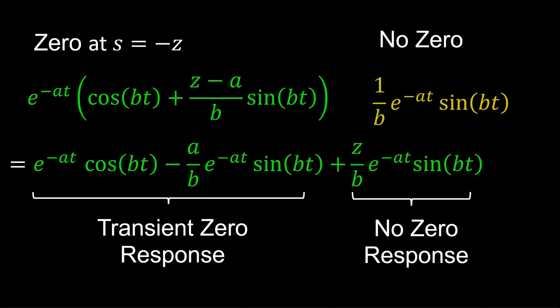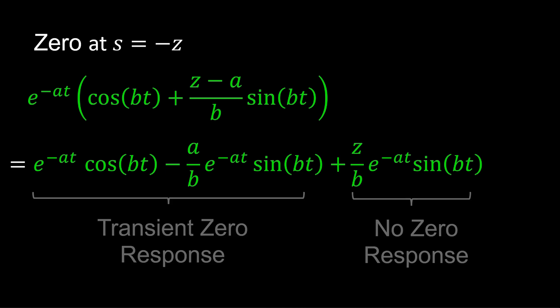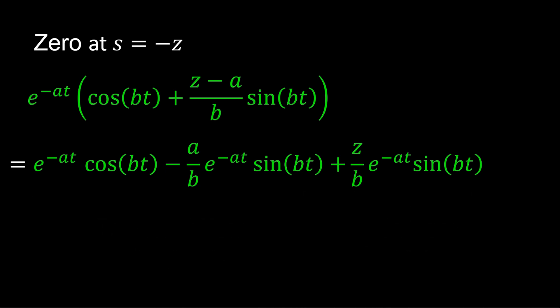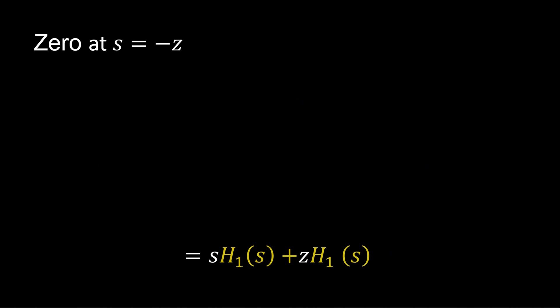What is this additional transient response? Take the Laplace transform of each term, and we find the transient is the derivative of the no zero response.